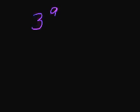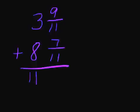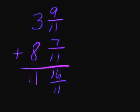Let's try 3 and 9 elevenths plus 8 and 7 elevenths. Once again I see that my denominators are the same, so I know I'm going to just simply need to add my numerators together. I'm going to start off by adding 3 plus 8, which are my whole numbers — I get 11 — and then I'm going to put my denominator down, which is elevenths, and I'm going to add together 9 and 7 to get 16. So when I look at my answer I see I have 11 and 16 elevenths. My numerator is larger than my denominator, so I need to simplify it.